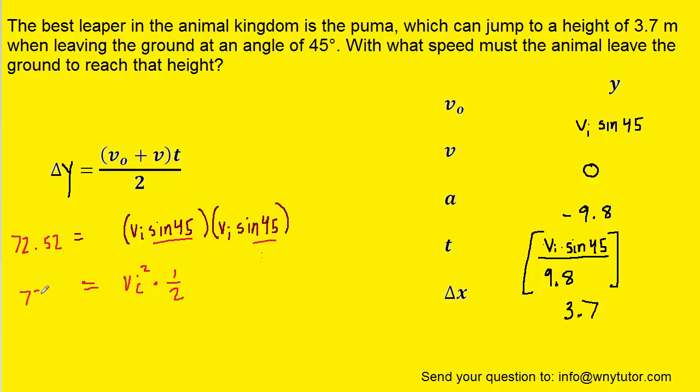So we still have this times one half on the right side. To get rid of that, we can multiply both sides of the equation by two. A lot of multiplication going on here.